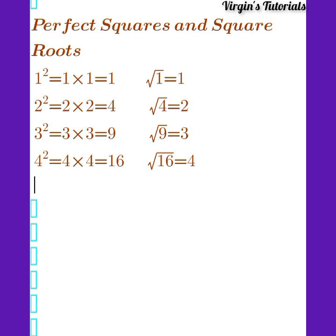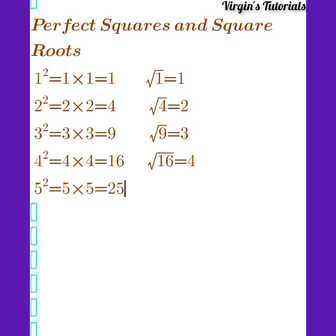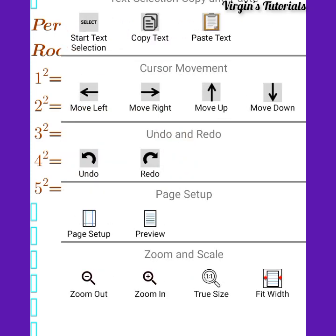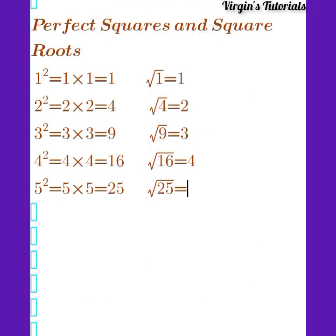Now, we have 5 raised to the power 2, that is 5 squared. 5 squared is simply equal to 5 times 5, and 5 times 5 is 25. When you have the square root of 25, we simply have 5. The square root of 25 is 5.